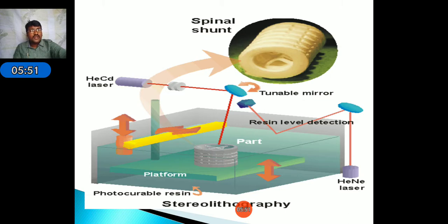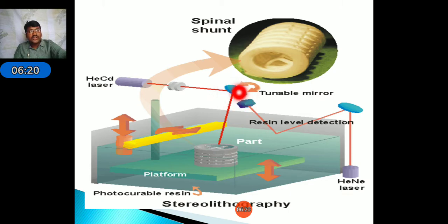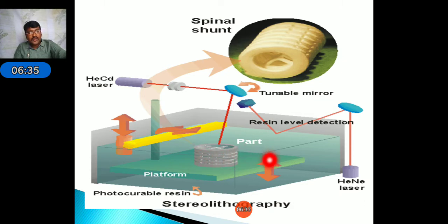Observe here how the object is prepared using this technique. The platform is set, and the laser is first transmitted to the mirror. The tunable mirror rotates as per the pattern. When the laser falls on the liquid epoxy material, a layer is created. After that, the platform moves in the Z direction downward, and in this way the prototype model is created.